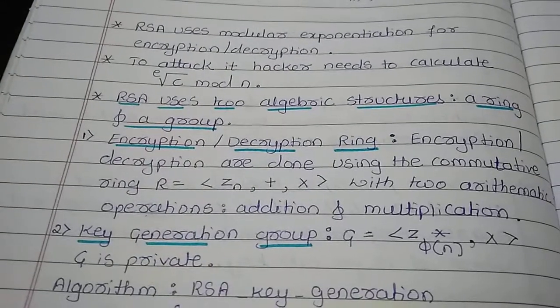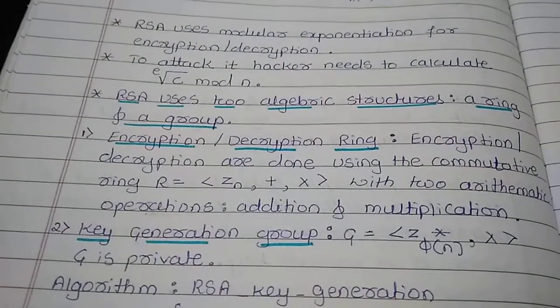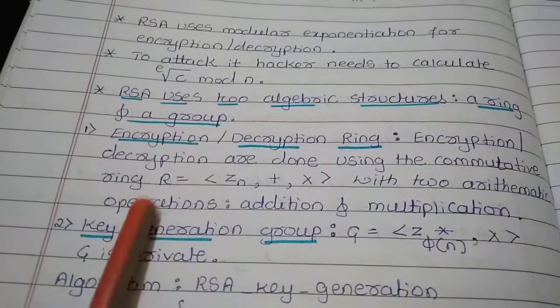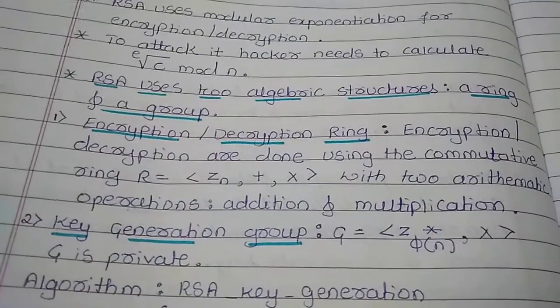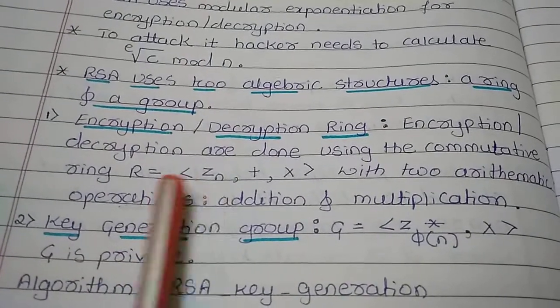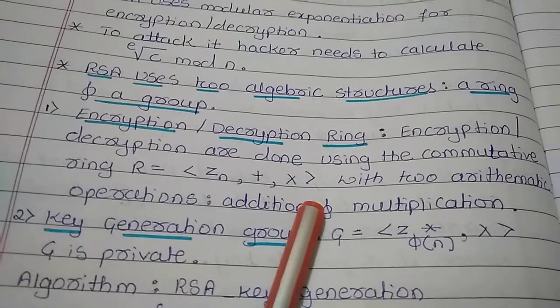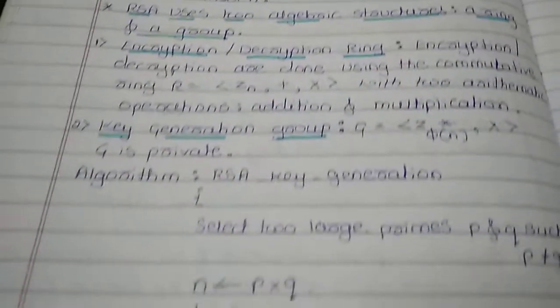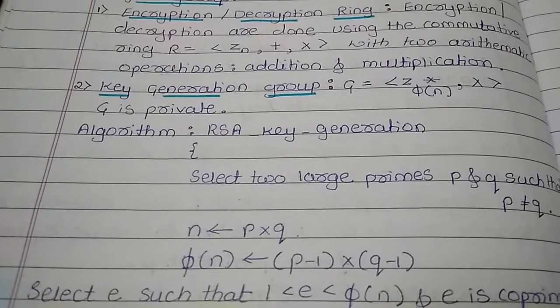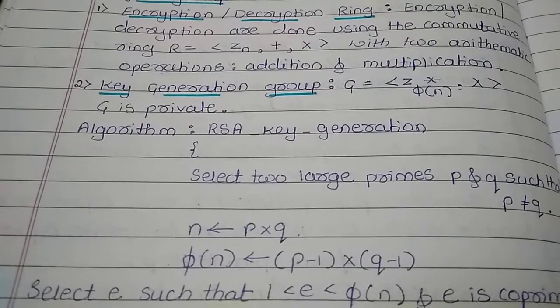RSA uses two algebraic structures, one is ring and another is group. Ring is used for encryption and decryption purpose where R is any set of integers with addition or multiplication operations. Group is used for key generation purpose. The key is used from the group G where G is private.